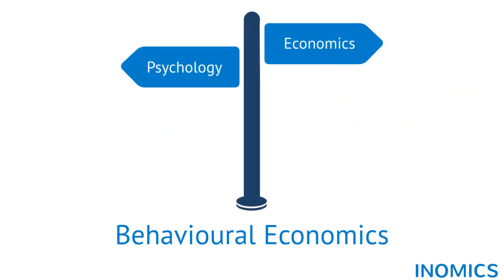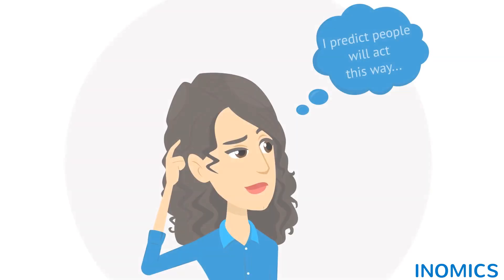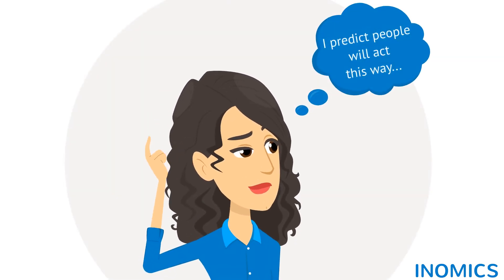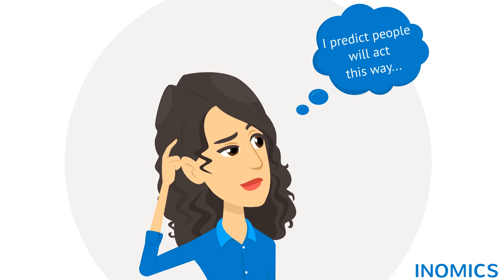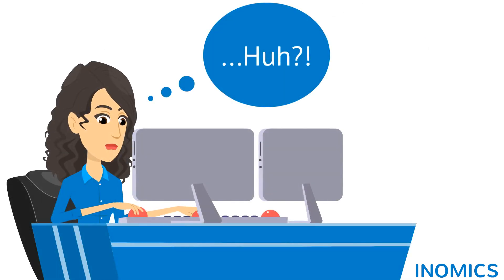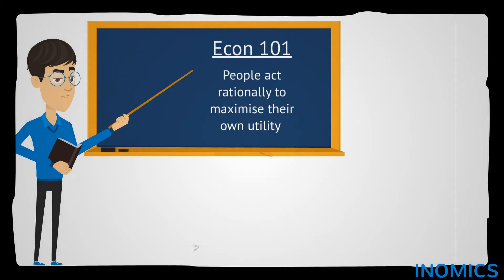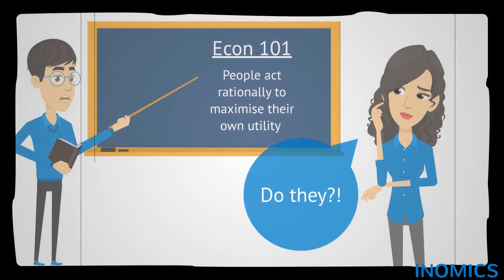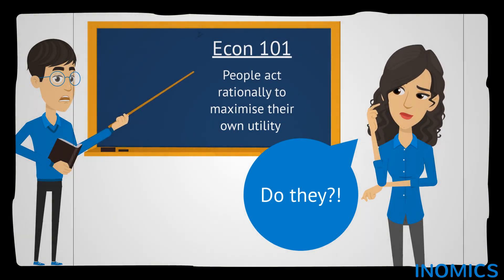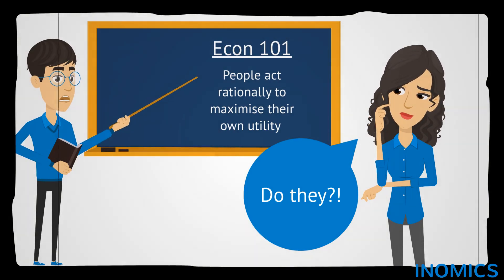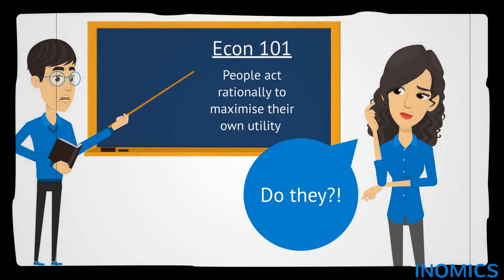Behavioural economics is commonly understood to stand at the intersection between psychology and economics. Those who practice it explore how people make economic decisions and why their behaviour does not always follow the predictions of traditional economic models. Increasingly popular in the past few decades, Behavioural Economics mounts a challenge to the classical economic assumption that people always act rationally to maximise their own utility or outcomes.